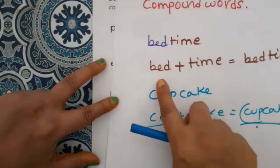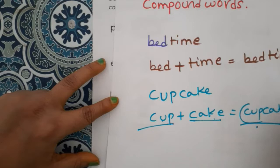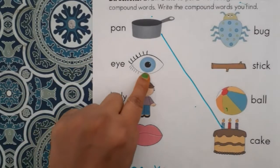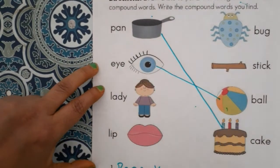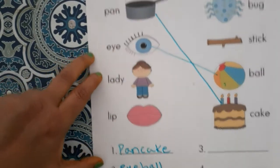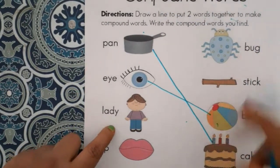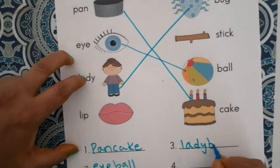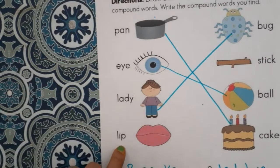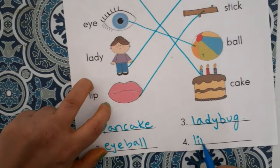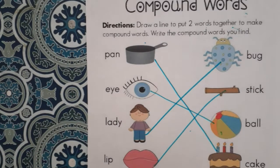How to write compound words: eye plus ball gives us eyeball. Next, lady plus bug gives us ladybug. Then lip plus stick gives us lipstick.